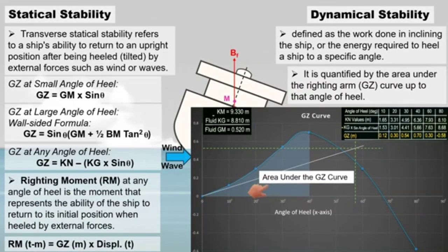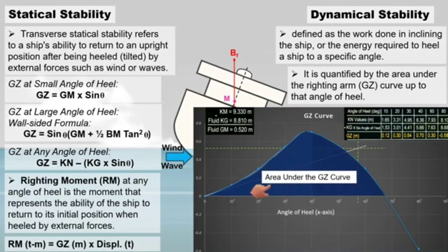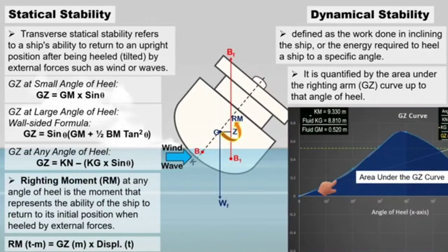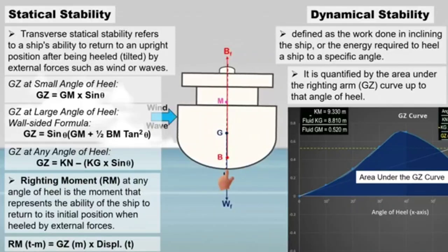This area represents the energy needed to incline the vessel and provides insight into the ship's ability to resist capsizing under dynamic conditions. A larger area under the GZ curve indicates greater dynamical stability, meaning the ship can absorb more energy from external forces without capsizing.